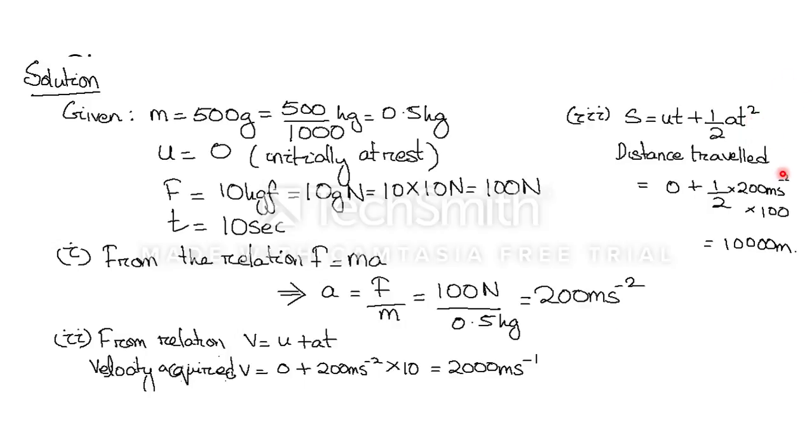We are putting the values of ut and a already calculated as 200 here. And t is given as 10. So directly I have put in the value of 10 square, 100. And the distance becomes 10,000 meter. This is how we can calculate.